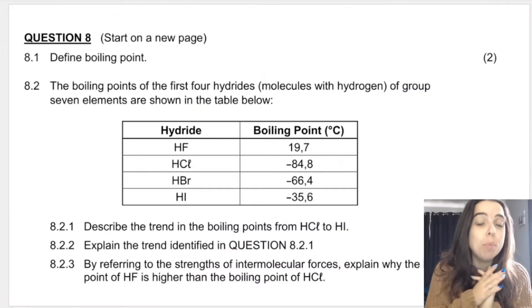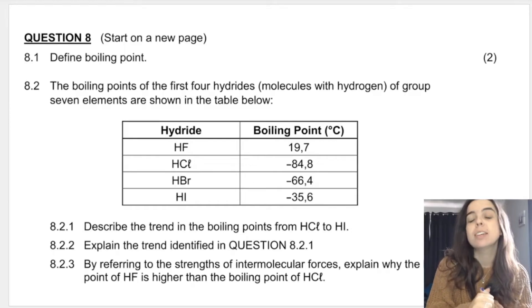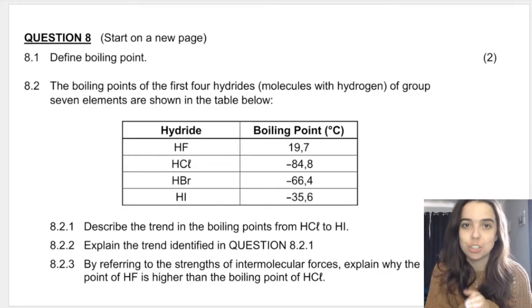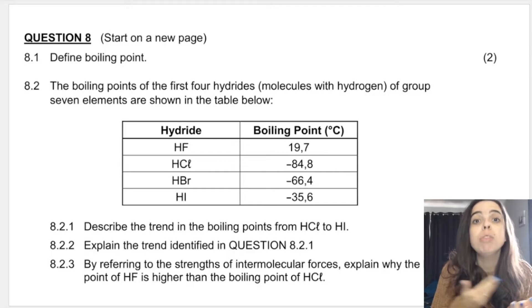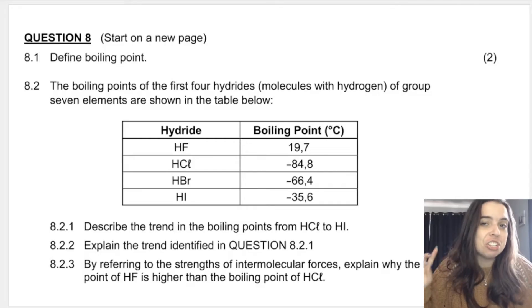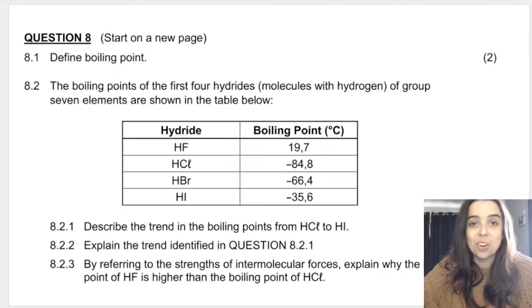Now the first thing that I want to point out is that in every chemistry and every physics exam you will be asked definitions. In question 8.1 you can see on the screen behind me that they ask you to define boiling point. Certain definitions are in the matric exam guidelines and you need to know those word for word. When you give a definition, if it's missing some key points, some very important words or key phrases, then they will subtract marks.